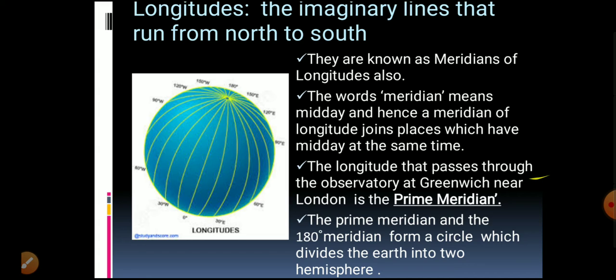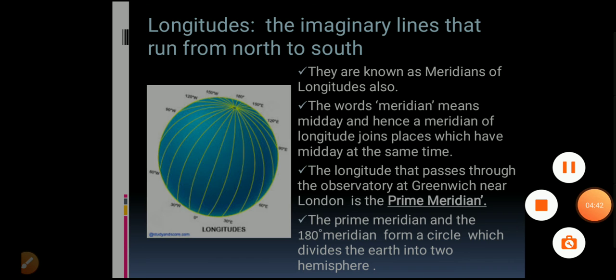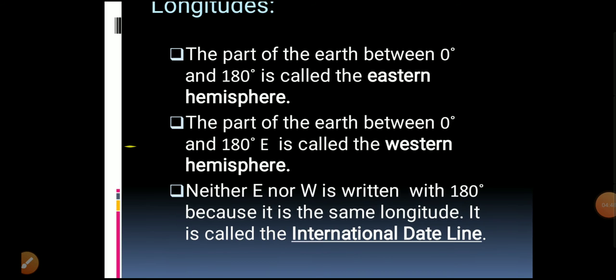These two hemispheres are the Eastern Hemisphere and the Western Hemisphere. The part of the Earth between 0 degrees and 180 degrees east is called the Eastern Hemisphere, and the part between 0 degrees and 180 degrees west is called the Western Hemisphere.